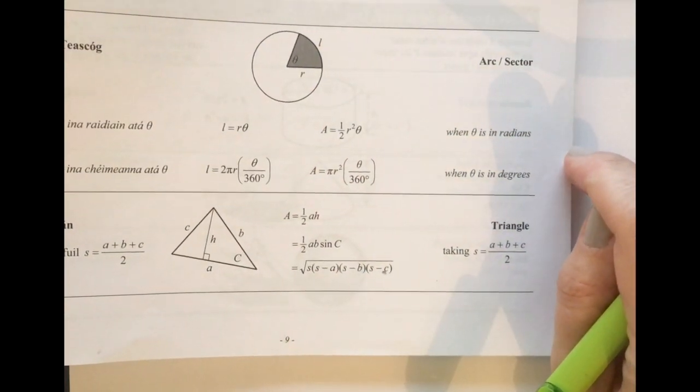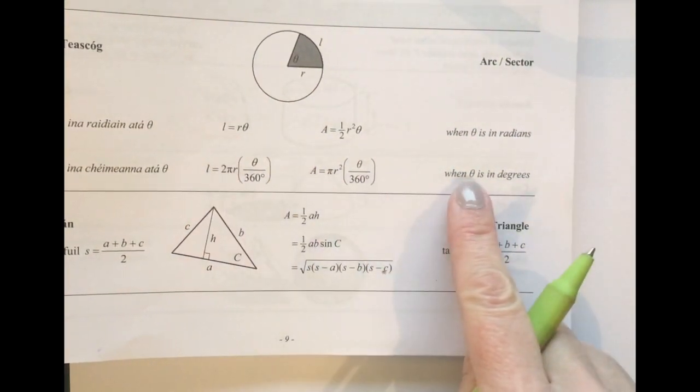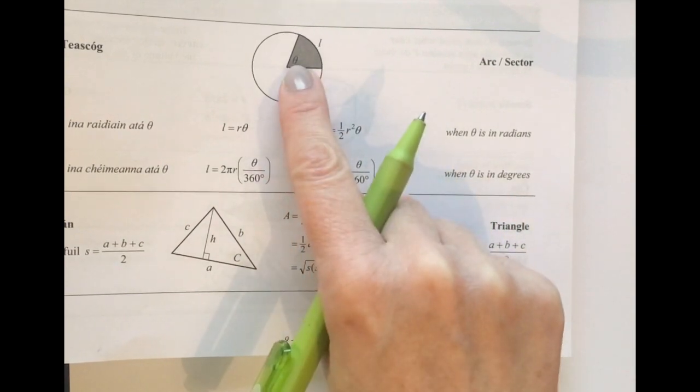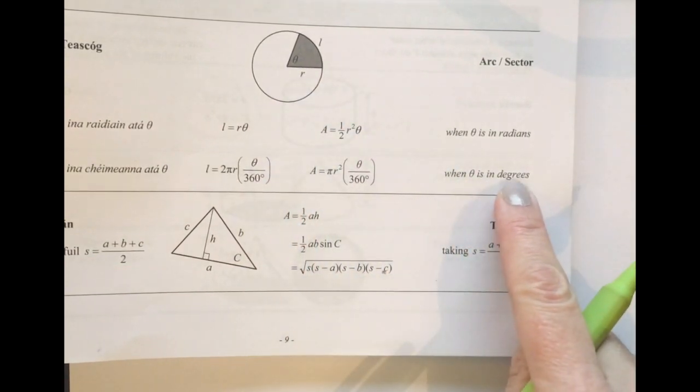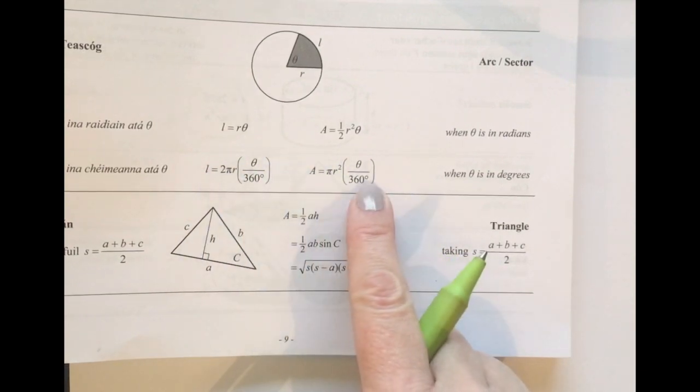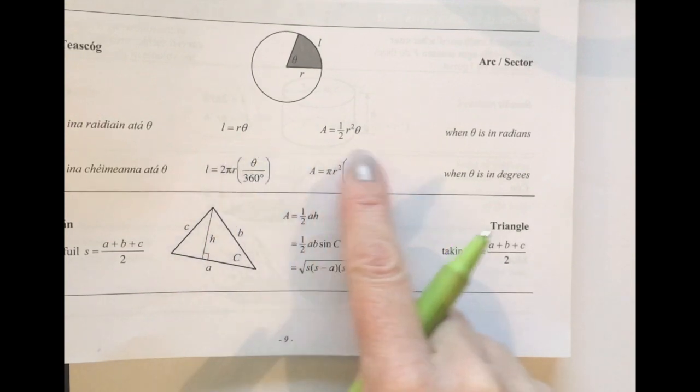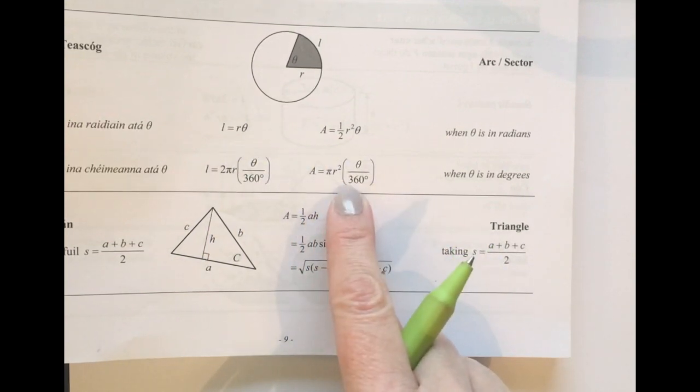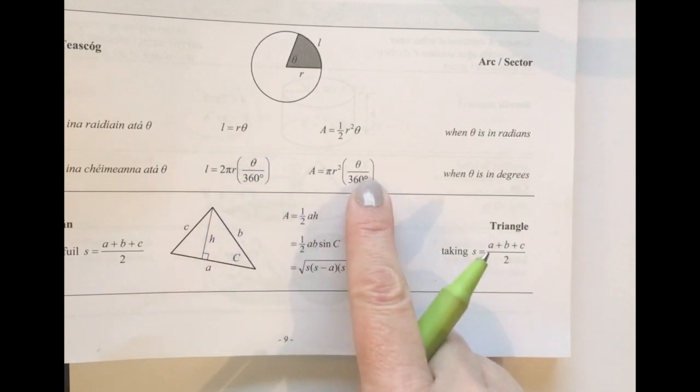The arc length just being the length of the curved bit on the outside. The sector then being the area of the pizza slice, if you like. The formula we'll be using is the one where the angle, the theta in other words, is in degrees. So it's these two formulas down here that are relevant to us on page nine in the log tables. Now they look quite complicated, but you'll see quite quickly that they're quite easy to fill in.